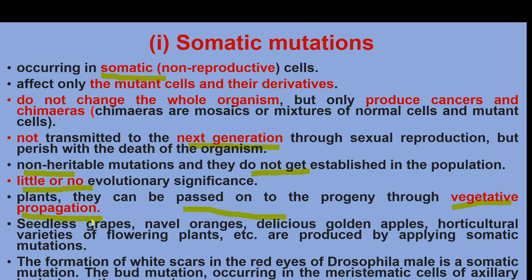Examples of somatic mutations include the seedless grapes, the orange, the delicious golden apple, and horticultural varieties of flowering plants. These are products of somatic mutations.